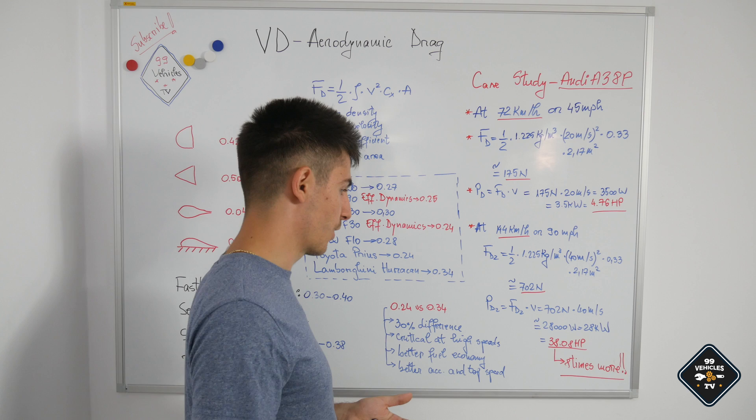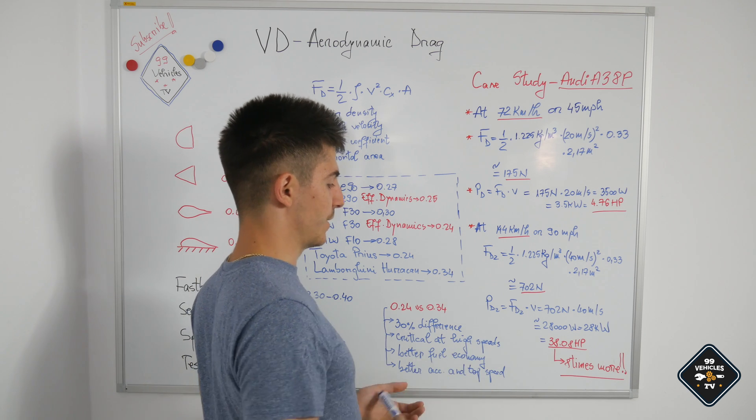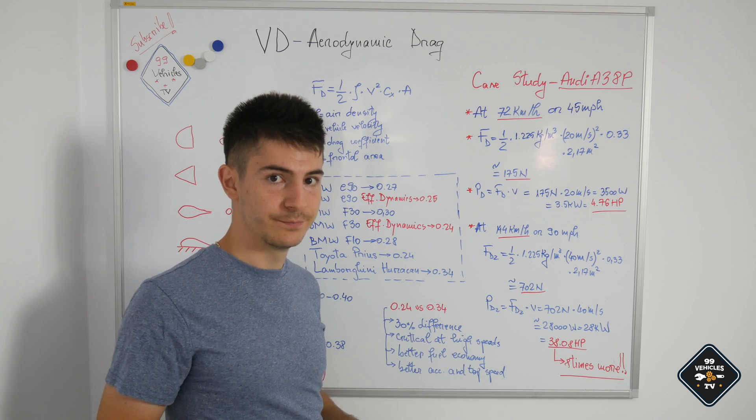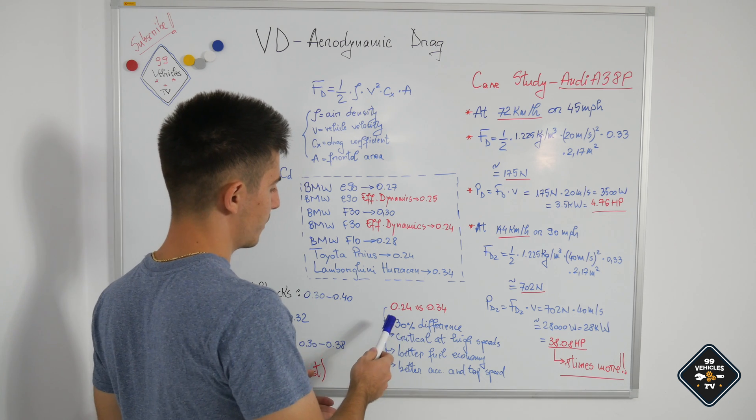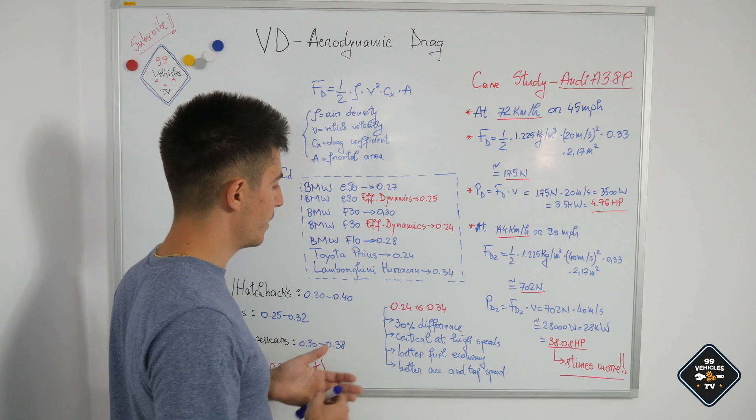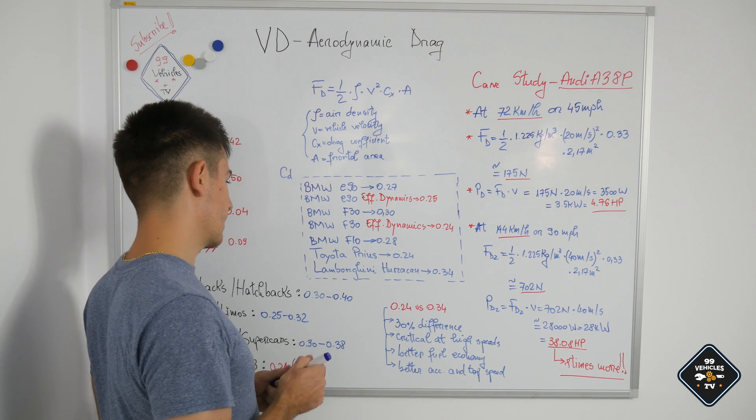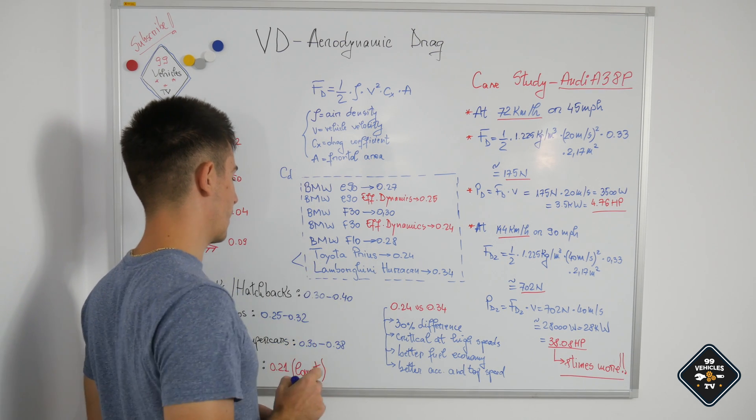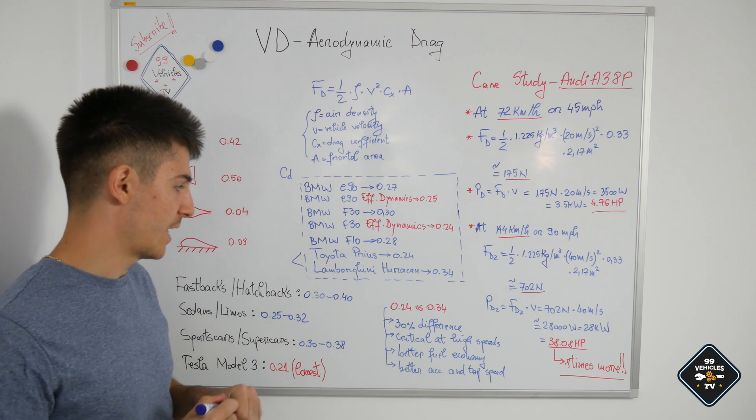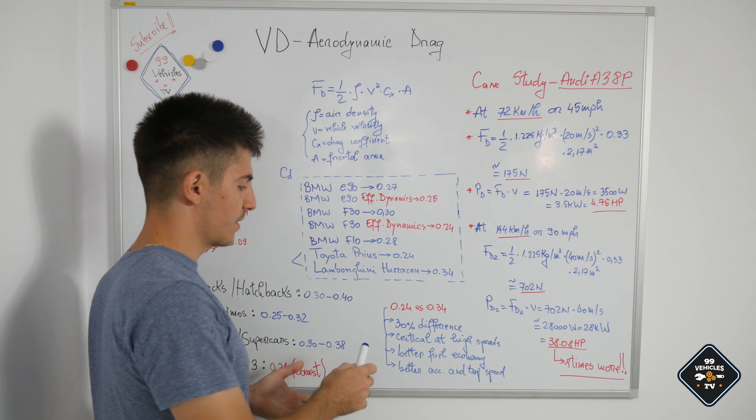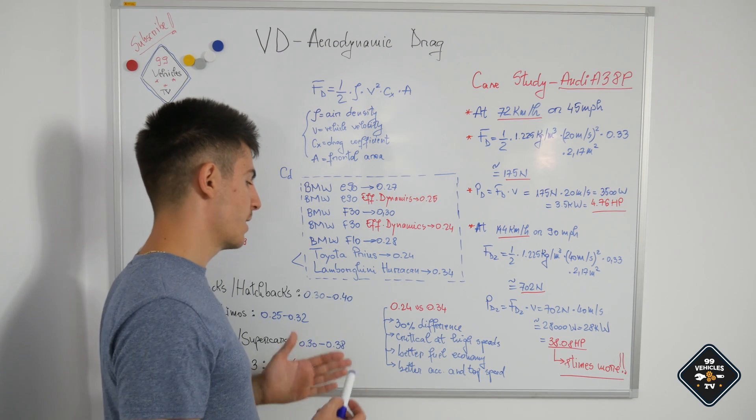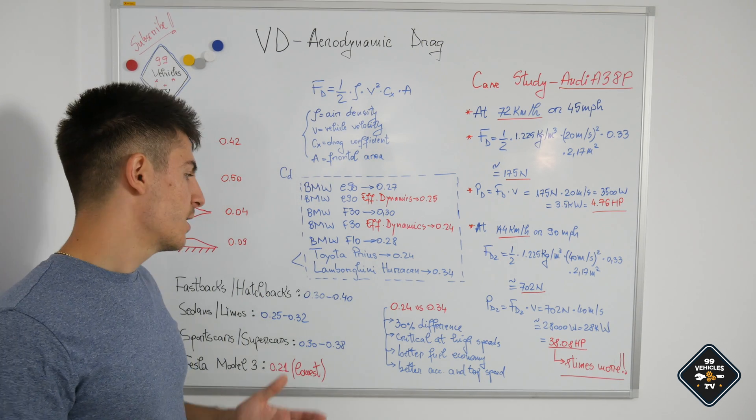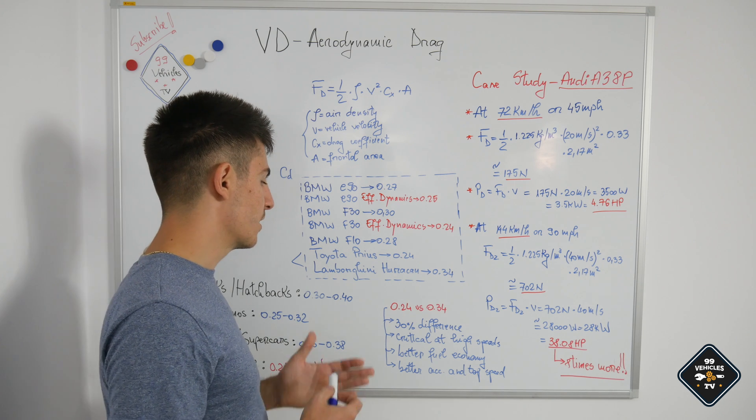The Chiron needs to overcome these forces which are insane at that speed. And now if we compare the differences between 0.24 and 0.34, or simply comparing the Toyota Prius with the Chiron just in terms of aerodynamics, it's exactly 30 percent difference between them, and it could be critical at high speeds.